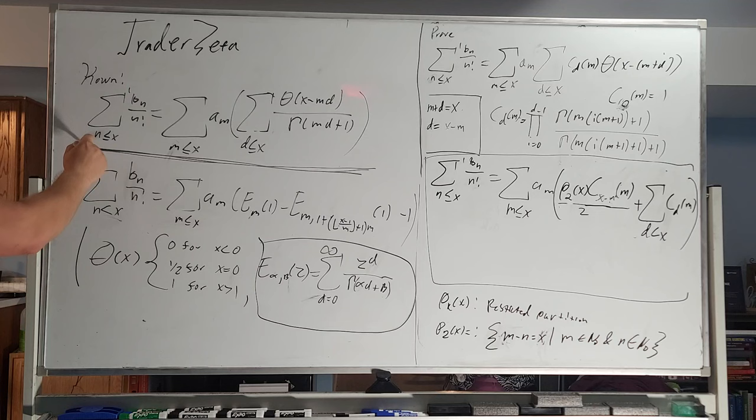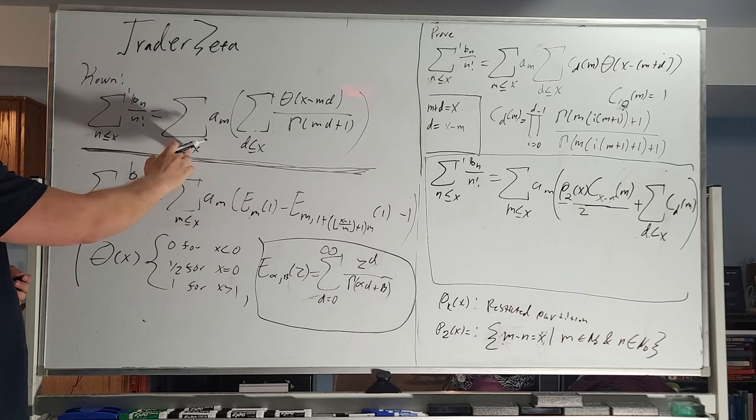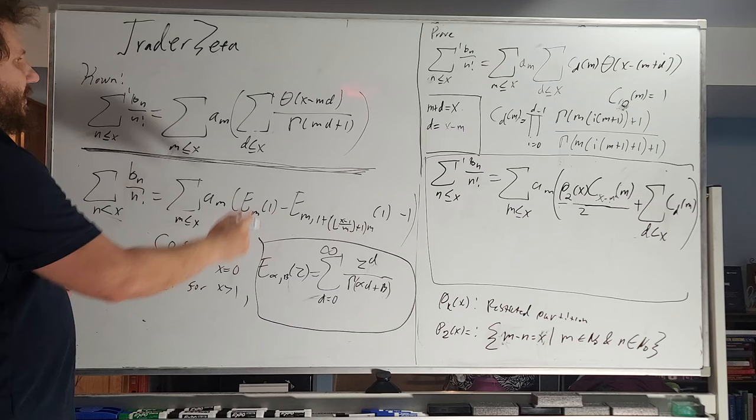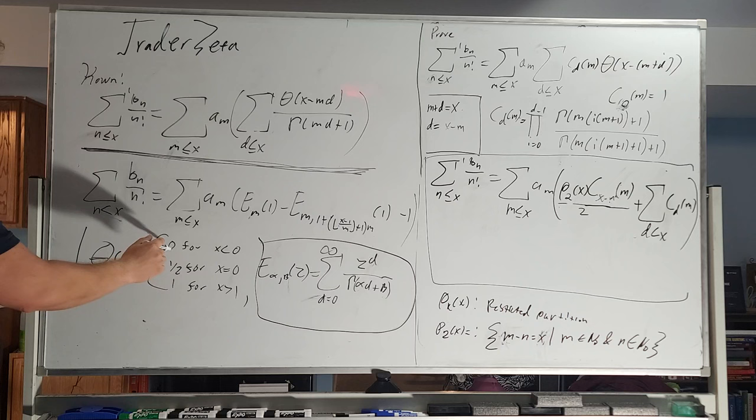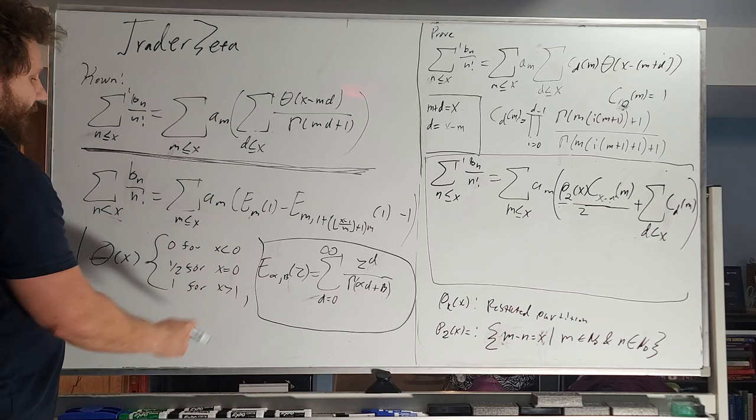So first let's state the result that we already know. We have this sum less than equal to x a sub m with this representation right here. Here's the Heaviside function. It is defined as Heaviside or theta of x: 0 for x less than 0, 1 half for x equals 0, and 1 for x greater than 1.